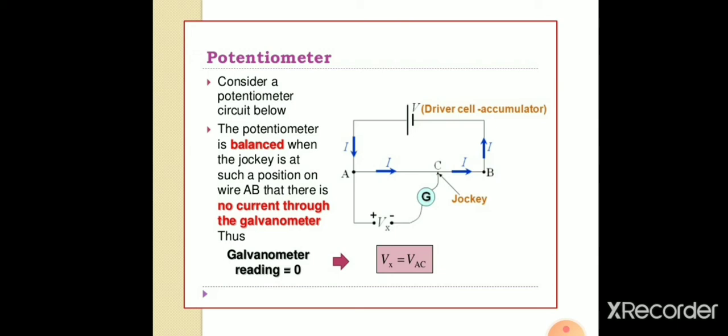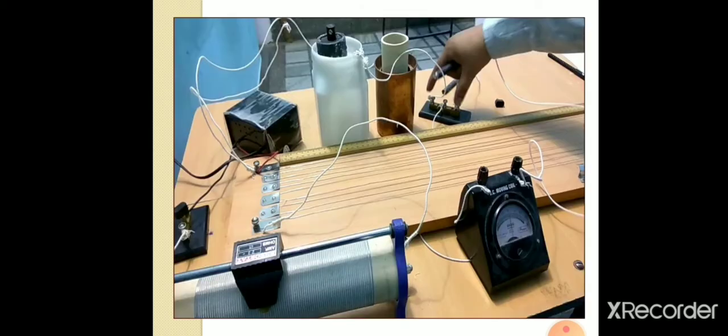Here you have got a driver cell or accumulator across which a wire AB is connected, and we are intending to measure the potential difference of the cell VX which is connected to a jockey through a galvanometer. This is the picture of a potentiometer you might have observed in the physics lab.